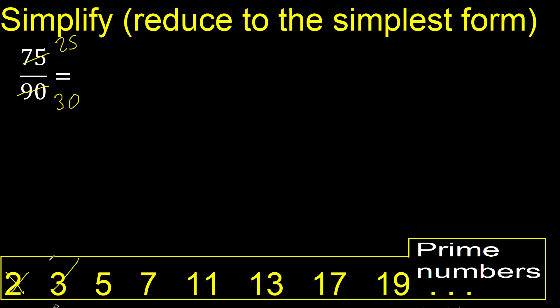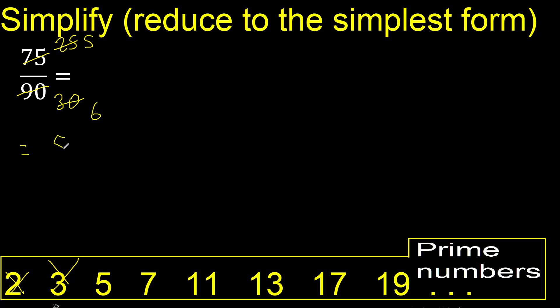25 and 30 cannot be divided by 3. Can be divided by 5: 25 divided by 5 is 5, and 30 divided by 5 is 6. Finish, because 5 and 6 cannot be divided by the same number.